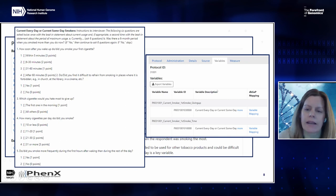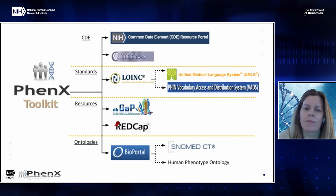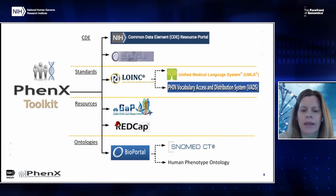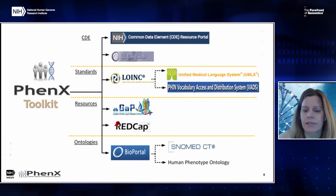There's also metadata — variable IDs and data element dictionaries. This is important both to the researcher and also provides the opportunity to link the PHENIX Toolkit with other resources. PHENIX is featured in the NIH Common Data Element resource. Standards from different vocabularies including LOINC are integrated, so each variable has a LOINC code. There's also been work to integrate PHENIX into dbGaP and also REDCap — a secure web application for building and managing online surveys used by NIH-funded CTSAs. Over 170 REDCap institutes are using the PHENIX protocols, including 70 outside of the United States.